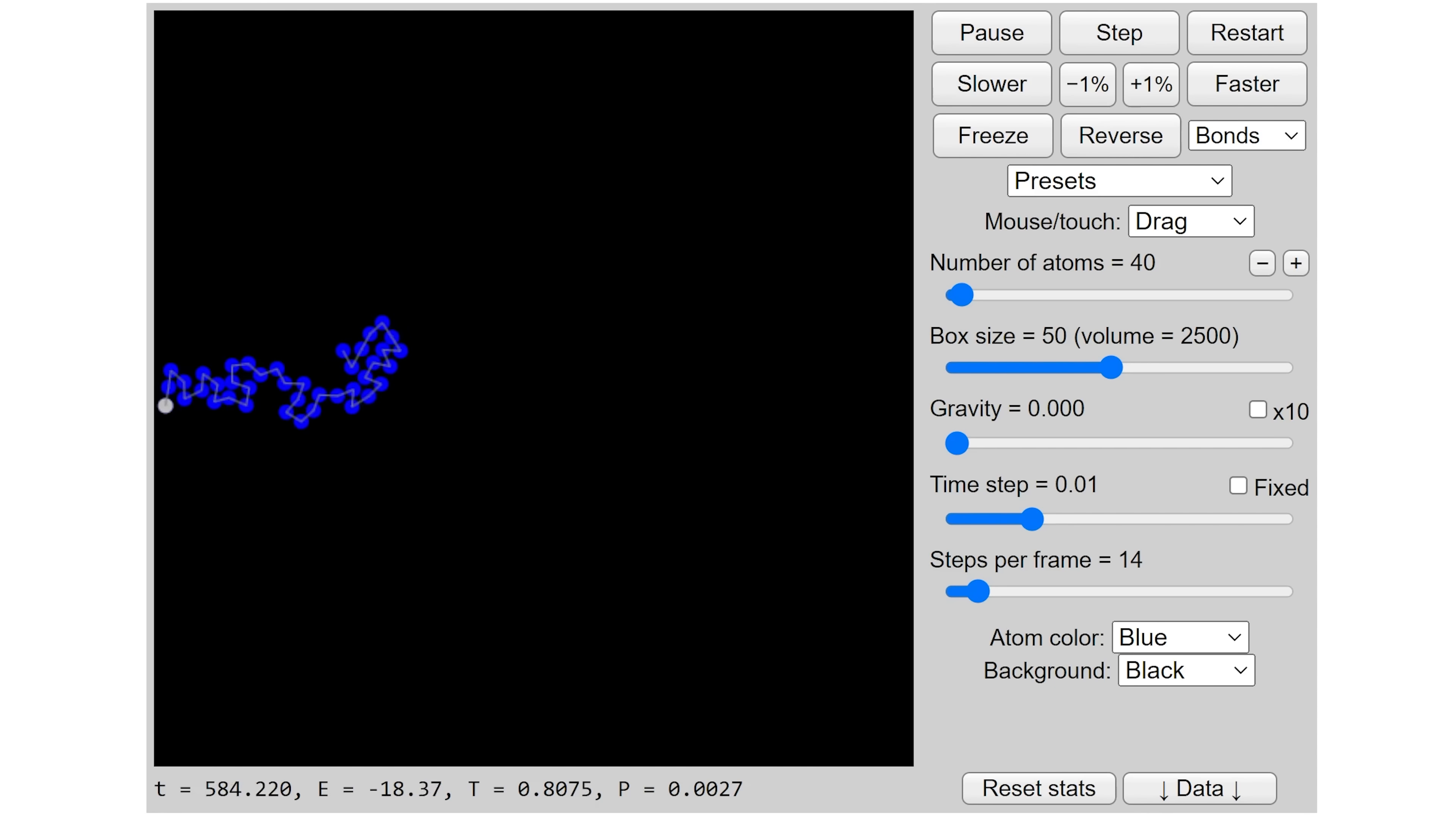But overall, there's overwhelmingly more ways to be in a coiled state than in a straight state. And since everything always tends to move towards the state that has more possible configurations, the string of atoms coiled together.